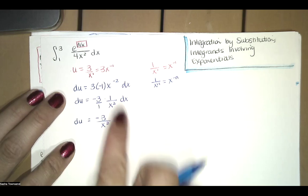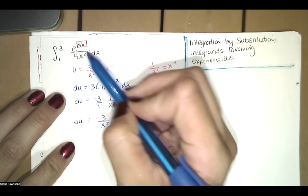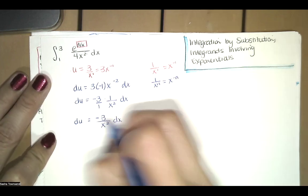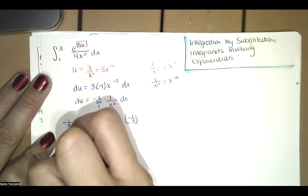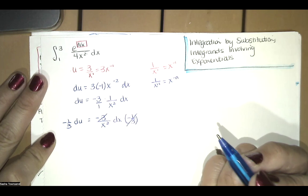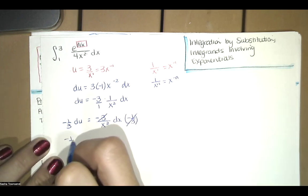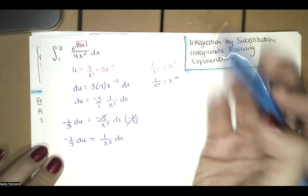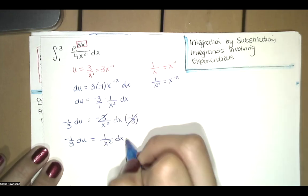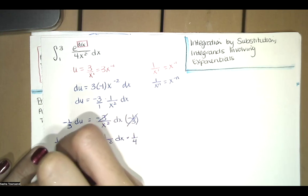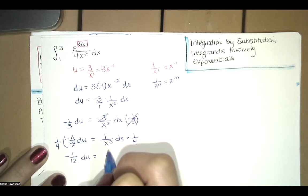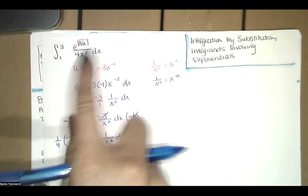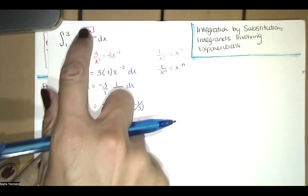Do I have this up here as a factor? I don't — I have something close. I've got x squared in the denominator and a dx, but I don't have that negative 3. To get rid of the negative 3 factor, we multiply both sides by negative 1/3. Negative 3 divided by negative 3 is 1, so we have negative 1/3 du equals 1 divided by x squared dx. To get the 4 in the denominator, we multiply both sides by 1/4, ending up with negative 1/12 du equals 1 divided by 4x squared dx.